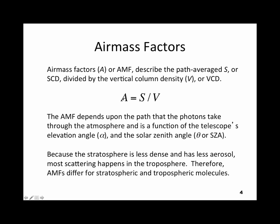The air mass factor comes from taking direct Sun observations. If the Sun is straight overhead, the slant column equals the vertical column and the air mass factor is 1. If the Sun is lower in the sky, the slant path becomes longer because you're looking more tangent to the Earth, and the air mass factor increases. For MAX-DOAS specifically, the air mass factor varies with the telescope's elevation angle alpha and the solar zenith angle theta.